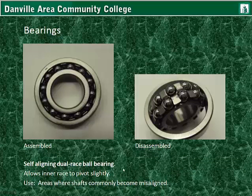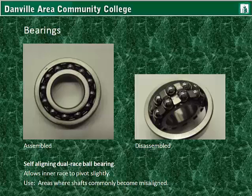Here is a self-aligning dual race ball bearing. This type of ball bearing allows its inner race to pivot slightly. The inside of the outer race is tapered, so once the bearings are inserted, the center point where the shaft goes through is able to pivot from side to side slightly, while still maintaining the ball bearings within the track. These types of bearings are used where the shafts become slightly misaligned, such as a carrier bearing.